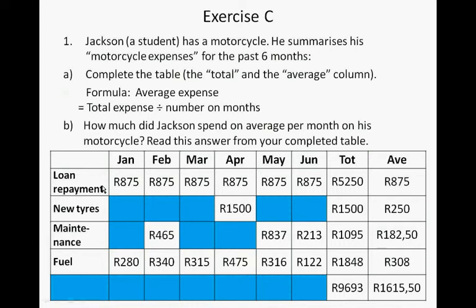Here's the table. These are his loan repayments: 875. If you add all these 875s, you get 5,250. On average, it is 875 per month. For new tyres, it was 1,500 Rand. The total is 1,500.